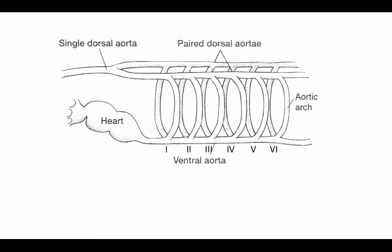The aortic arches are diagrammed as a single vessel going from the ventral aorta coming out of the heart all the way up to the dorsal aorta. But remember these are actually a series of vessels that are going to interact with the gills — there's an afferent branchial artery giving rise to a collecting loop that feeds into the primary and secondary lamellae, then picked up on the other side and feeding into the efferent branchial arteries going up into the dorsal aorta. We can think of this whole system as just a single aortic arch, and we have a number of them corresponding to each of the gills.